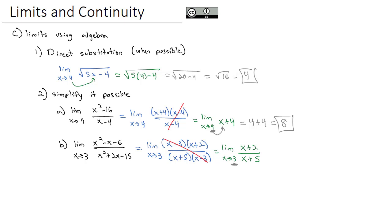Now we can do the direct substitution of that 3 into both of those x's, giving us 3 plus 2, over 3 plus 5, or 5 eighths for our limit.